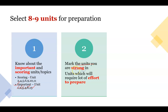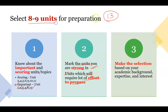Mark the units you are strong in out of all 13 total units — the ones you like and know well. Also mark the units which will require a lot of effort to prepare, for example, if you have never studied animal physiology, you have to decide whether it is worth the effort. Then make your selection based on your academic background, expertise, and interest — units which will require the least time to prepare. Review the complete CSIR syllabus, check topics covered during your master's degree, and identify what you still need to work on.